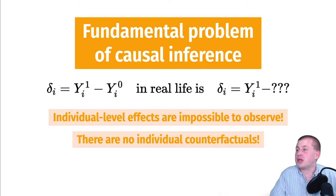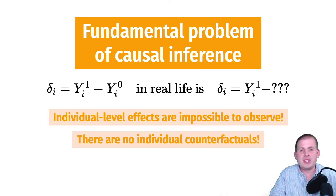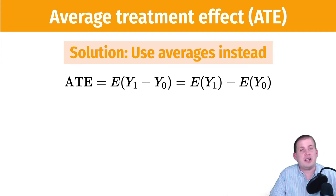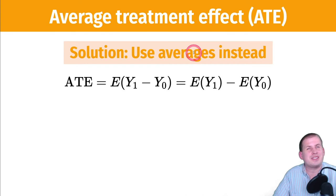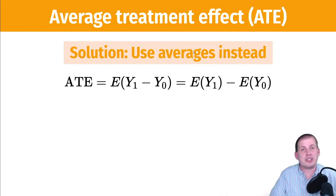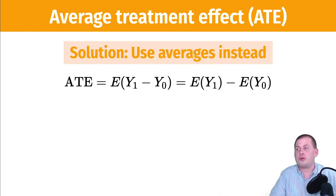The solution to this fundamental problem — in the potential outcomes framework — is average treatment effects (ATE). For the rest of the class, this is the goal of all the fancy regression models we'll be running. We want to find the average treatment effect of a program or intervention on an outcome. We're no longer looking at individual-level effects — we're looking at group effects, the average of everybody's individual effects, which lets us get at the overall effect for the whole population.